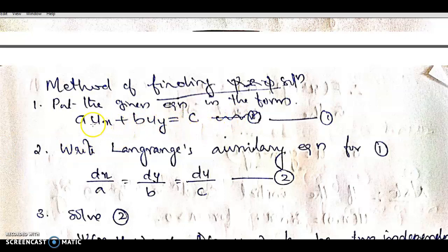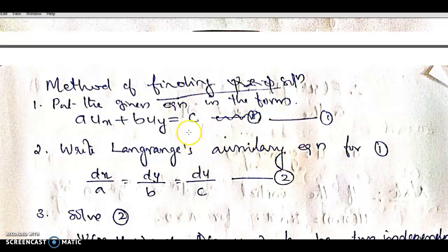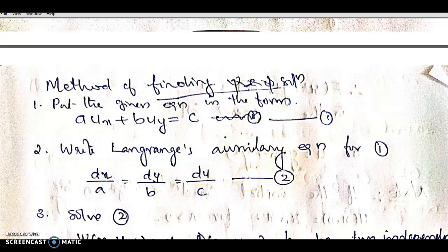We represent the quasi-linear equation using the Lagrange method with a standard formula. We write the Lagrange auxiliary equation for equation 1 as: dx/a = dy/b = du/c. This is the auxiliary equation.